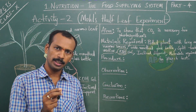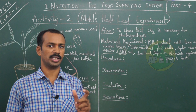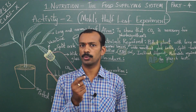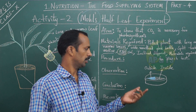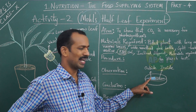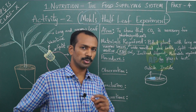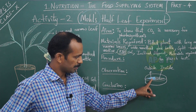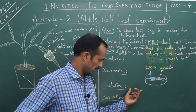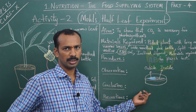After three to four hours, detach the leaf from the plant, remove the split cork from the bottle, and send the leaf for a starch test. The observation is that the half of the leaf which was outside the glass bottle changes to a bluish-black color, and the remaining half inside the glass bottle does not change its color. The conclusion is that starch is present in the outer part and absent in the inner part, meaning photosynthesis took place in the outer part but not in the inner part of the leaf.